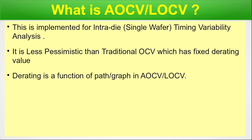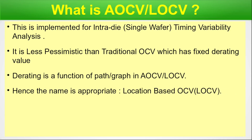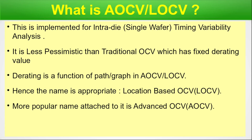Derating is a function of path or graph in AOCV or LOCV. As mentioned, if we go from one end to another end of a single wafer, there will be a path, and 'graph' is another concept in VLSI, especially in timing. So derating in AOCV is a function dependent on path or graph. Hence the name is appropriate: Location Based OCV, or LOCV, because the locations are determined by the path. The more popular industry name is Advanced OCV, i.e., AOCV.